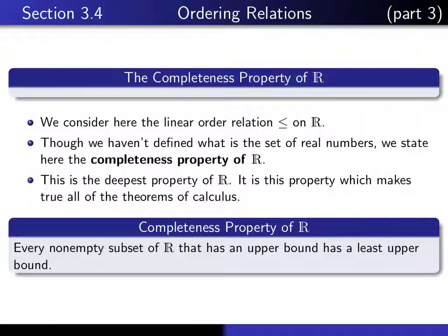If you have a subset of the reals which is non-empty and has an upper bound, in other words, there exists some number that's bigger than or equal to every element of the given set, then it's automatically true that the least upper bound of that set exists as a real number.